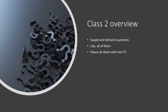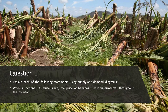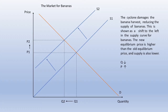Let's start. For question one, we need to explain the following statement using supply and demand diagrams: when a cyclone hits Queensland, the price of bananas rises in supermarkets throughout the country. For those not from Australia, Queensland is a tropical state where most of our bananas are grown, and it is cyclone-prone. Can we use a supply and demand diagram to show the impact of a cyclone on the supply and demand of bananas? Yes, we can.